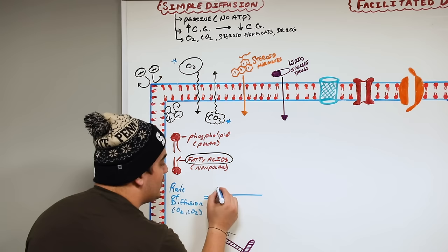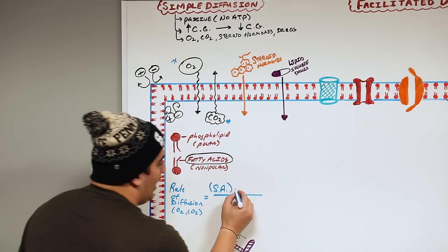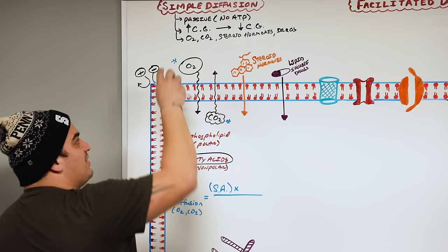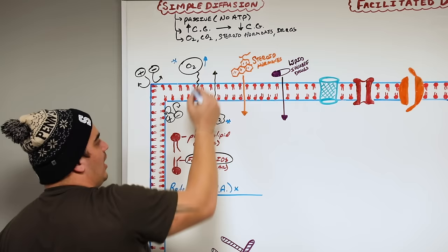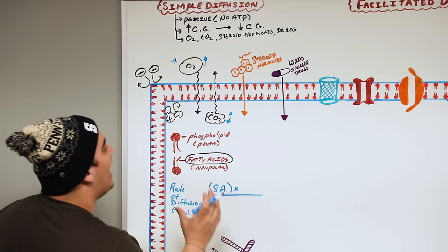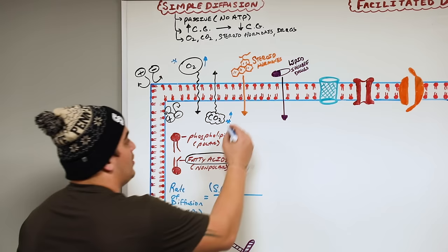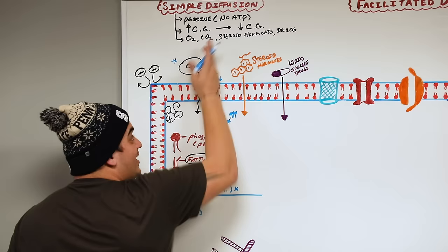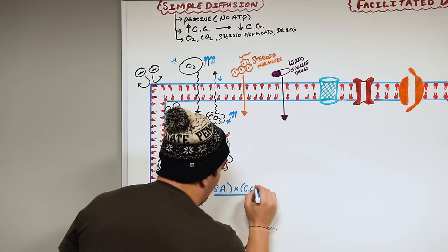The next factor affecting rate of diffusion is the concentration gradient. When there's a high concentration gradient — for example, oxygen higher outside the cell and lower inside, or CO2 higher inside and lower outside — more molecules will move in their corresponding direction. The higher the gradient, the more CO2 or oxygen will diffuse across.